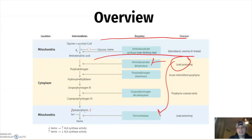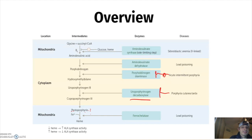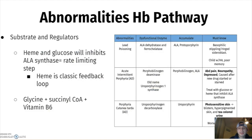Notice how many high-yield points are on this one slide. AIP inhibits the deaminase enzyme. Porphyria cutanea tarda involves the decarboxylase enzyme. We'll talk about those in more detail shortly.